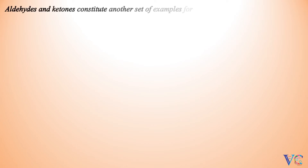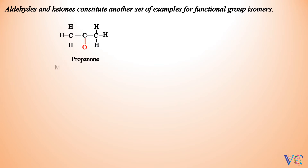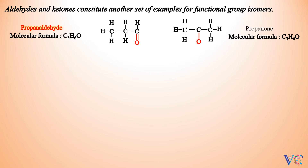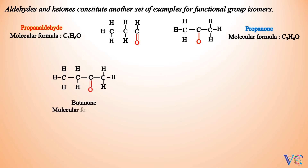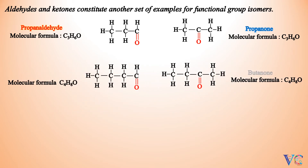Aldehydes and ketones constitute another set of examples for functional group isomers. Propanaldehyde and Propanone both have molecular formula C3H6O and are functional group isomers. Butanaldehyde and Butanone both have molecular formula C4H8O and are functional group isomers.